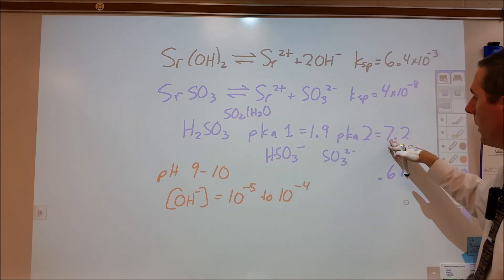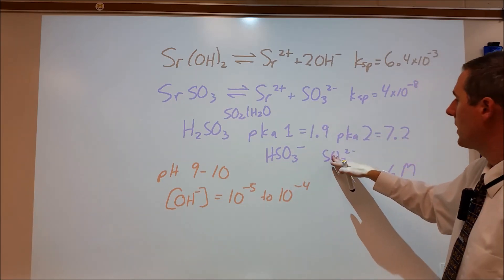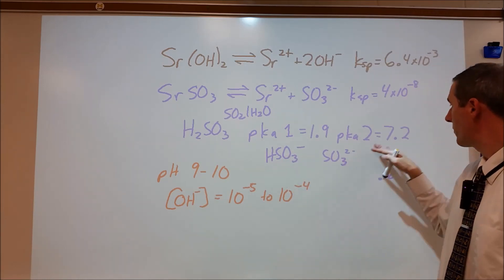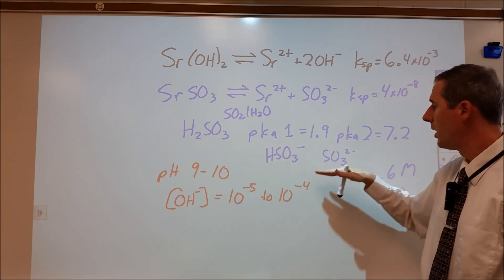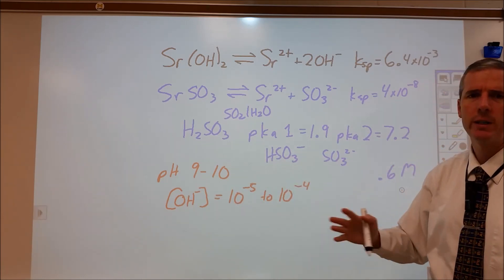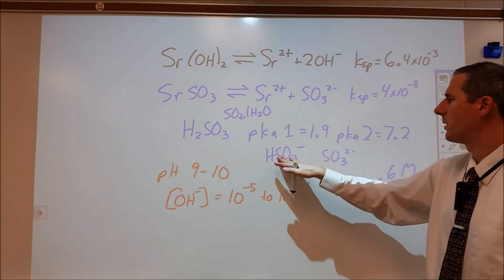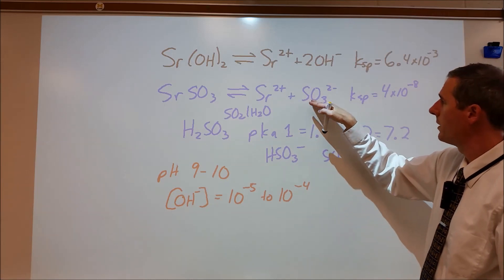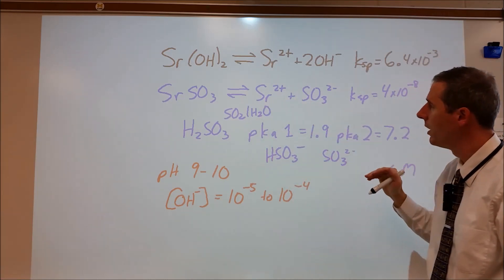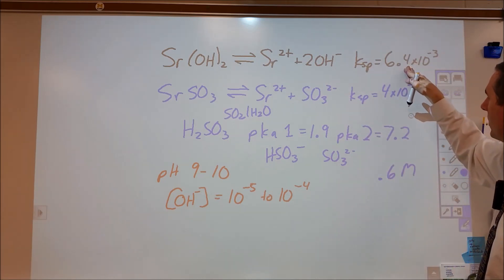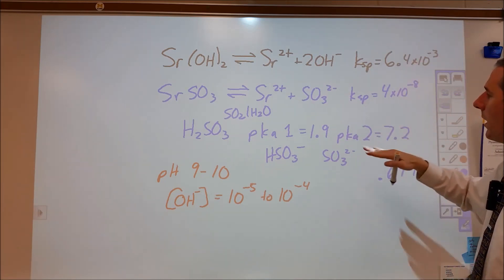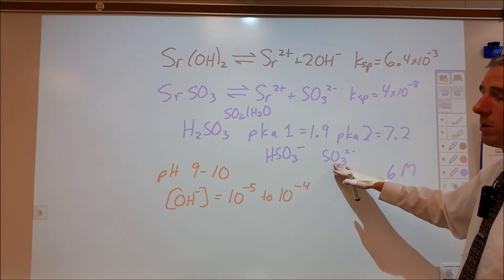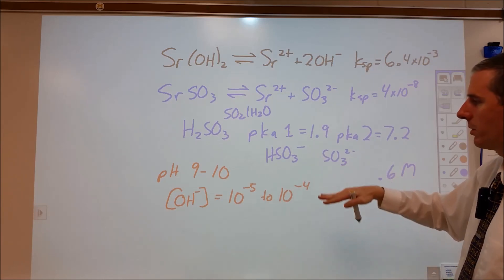So at a pH one unit above the second pKa, that will be 10 times as much of this as this. So by the time we hit two units of pH above 7.2 and we're at 9 to 10 range, we're looking at now 100 times more of this than this. So effectively we can consider it to be all this and none of this at that point. So that's what we're dealing with and that's why we're pretty confident that the precipitate that we're seeing is from the strontium and the sulfite, rather than strontium and hydroxide based on the solubility of this being much greater, and based on the fact that we've raised our pH well above that second pKa to where we're mostly predominantly in the sulfite form as opposed to something else.